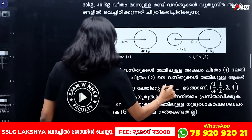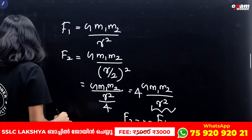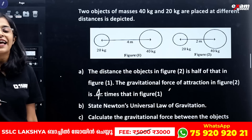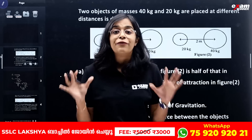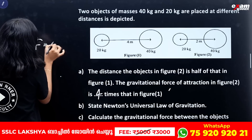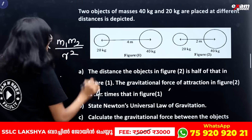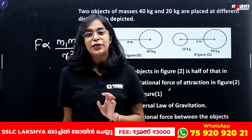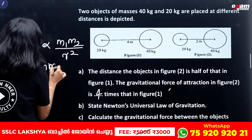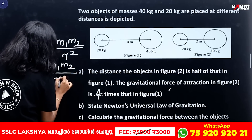Force is directly proportional to the product of their masses and inversely proportional to the square of the distance between them. The proportionality constant is the universal gravitation constant G. So F = G M1 M2 divided by R squared.